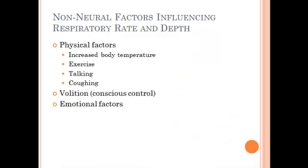Here is a list of non-neural things that can affect breathing rate: increased body temperature, exercise, talking, coughing, voluntary control, and emotional factors.